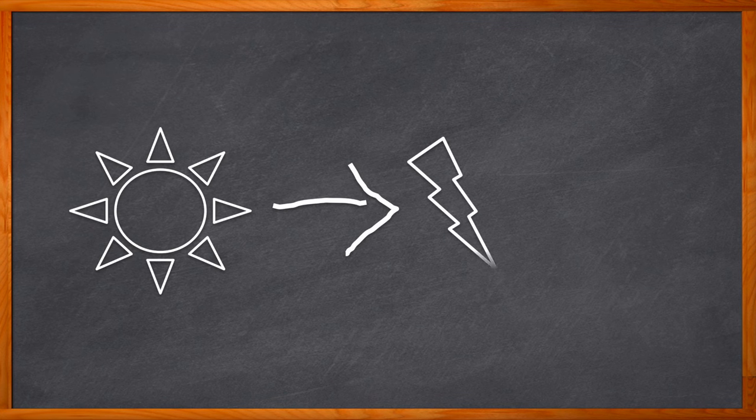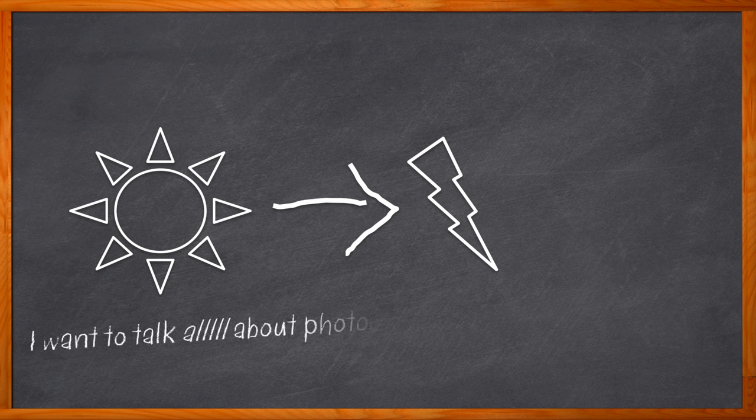So you want to convert light into an electrical current. Maybe you're working on a military or aerospace project, or maybe some kind of medical imaging design where you need a transimpedance amplifier to convert that current into a usable voltage. Or maybe you just want to geek out on everything related to photodiode transimpedance amplifiers. Well, you've come to the right place.